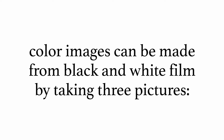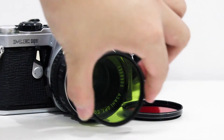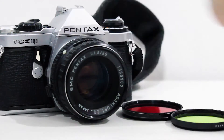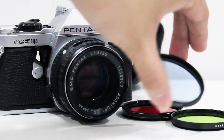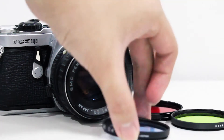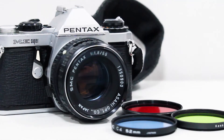So a quick recap: color images can be made from black and white film by taking three pictures — one with a red filter, one with a green filter, and one with a blue filter — and then combining them together. Seems pretty simple, so now let's take some trichromes.